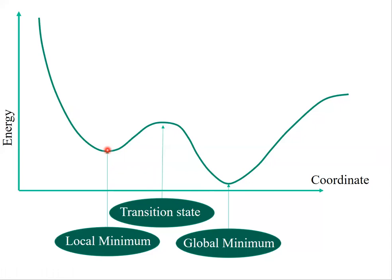Since we can get different optimized geometries from different starting points, the one with the lowest energy is called the global minimum, while all the others are called local minima. There are many local minima, and the lowest in energy among them is the global minimum. In the opposite case, if you ask the program to change the geometry to find the highest possible energy, this is called the transition state search.